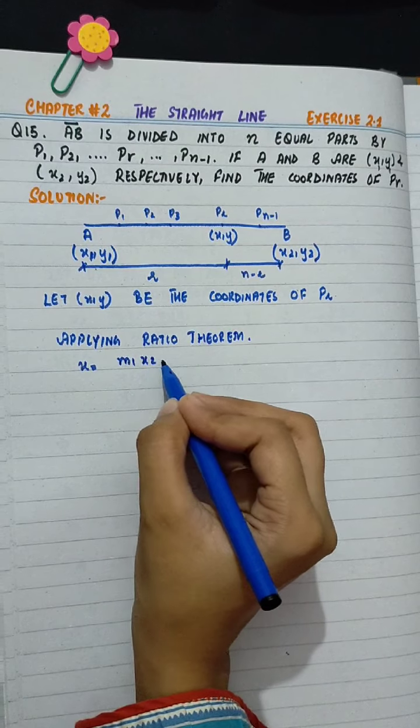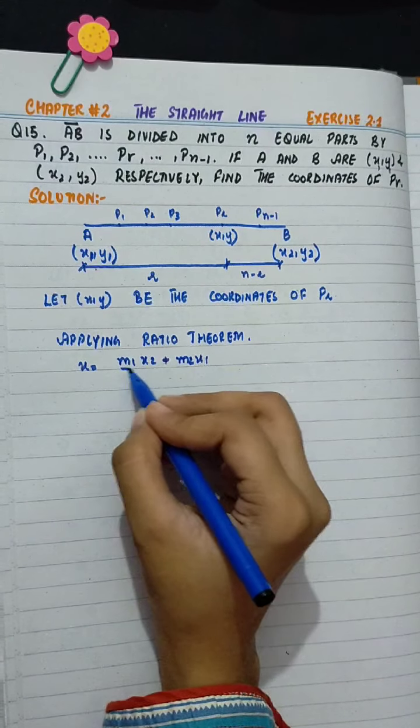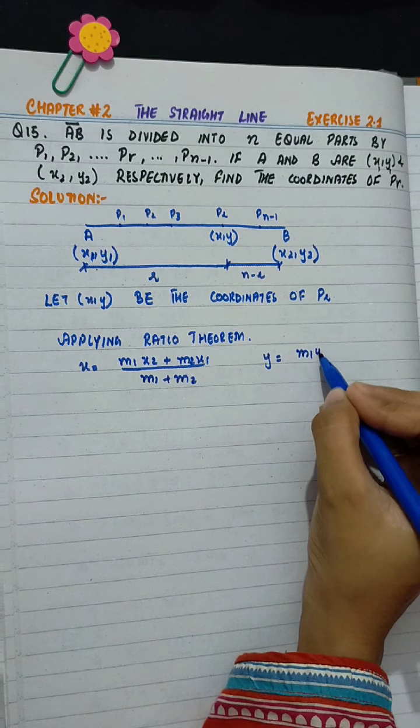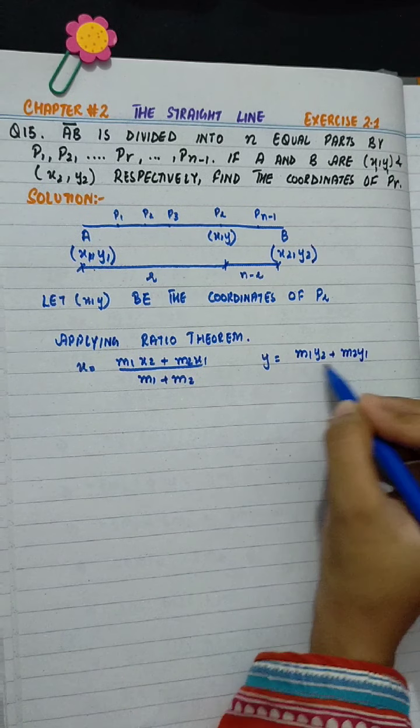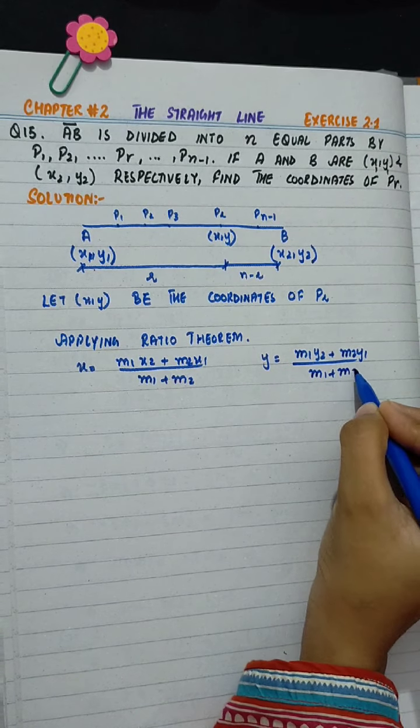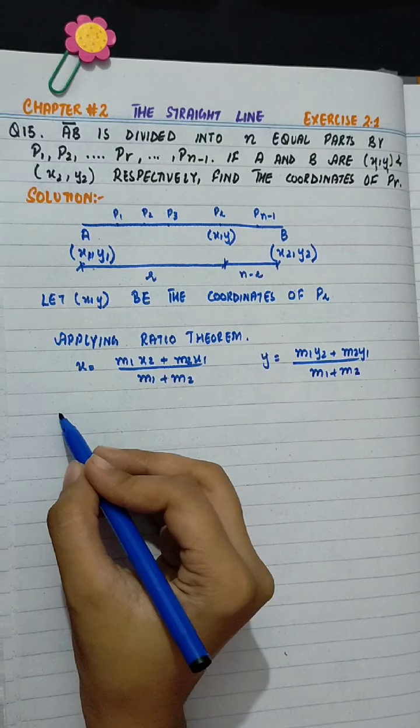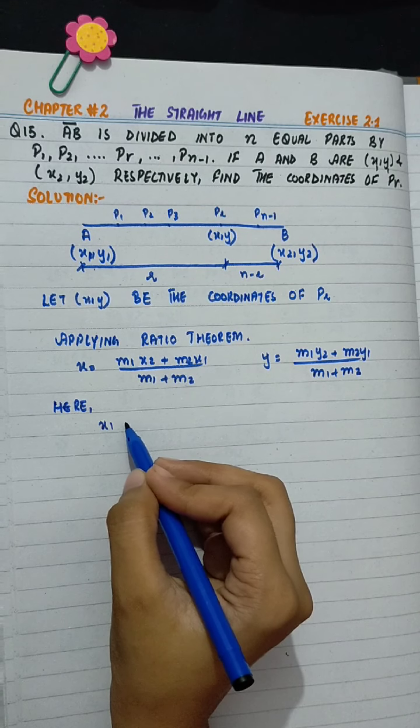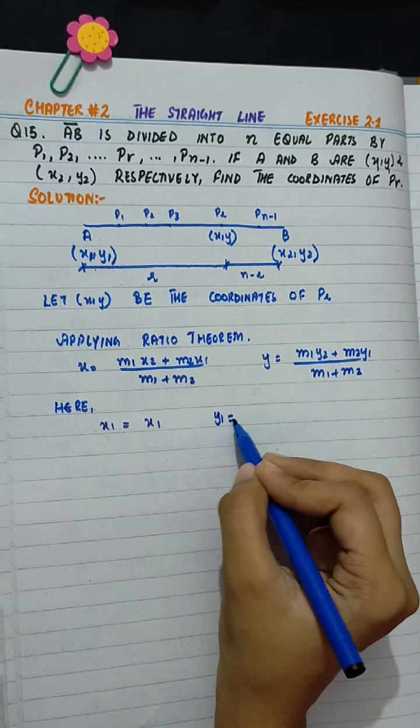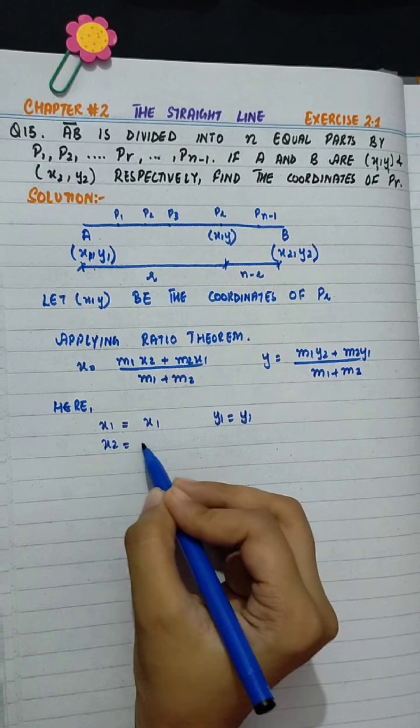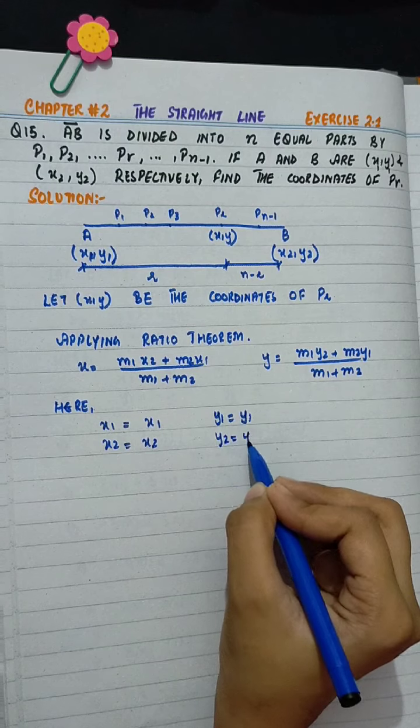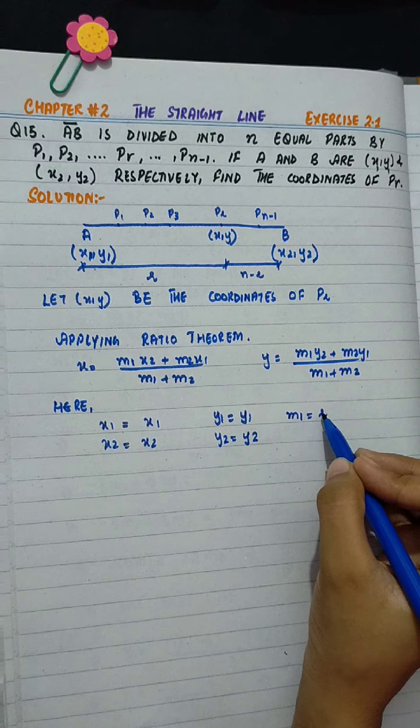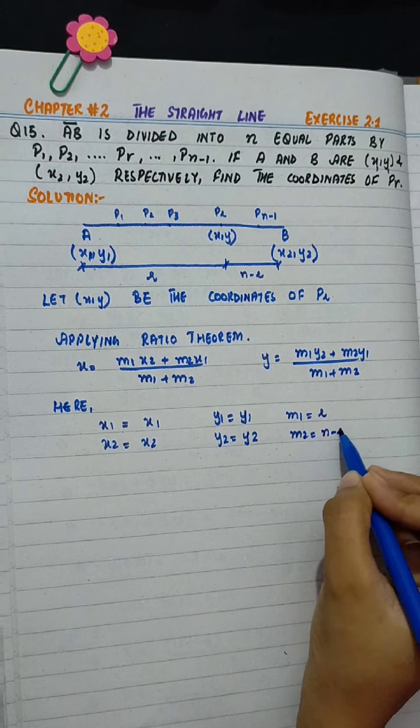X is equal to M1 X2 plus M2 X1 divided by M1 plus M2, and Y is equal to M1 Y2 plus M2 Y1 divided by M1 plus M2. Here, X1 is equal to X1, Y1 is equal to Y1, X2 is equal to X2 and Y2 is equal to Y2. M1 is equal to R and M2 is N minus R.